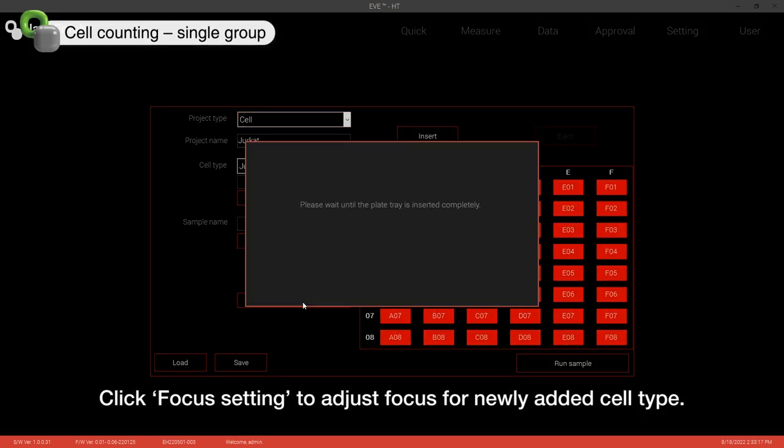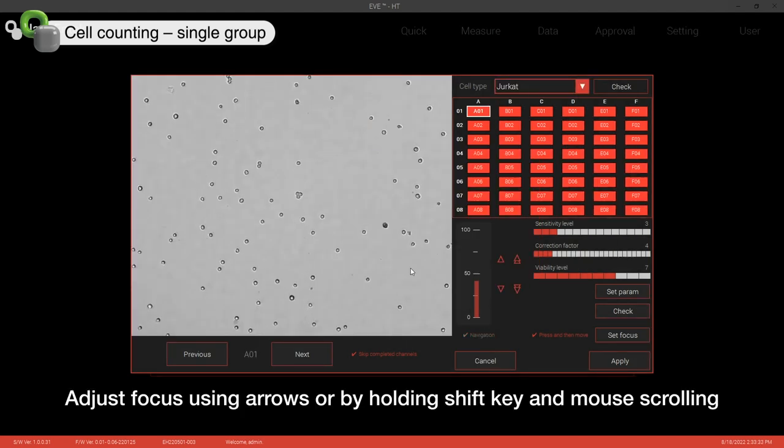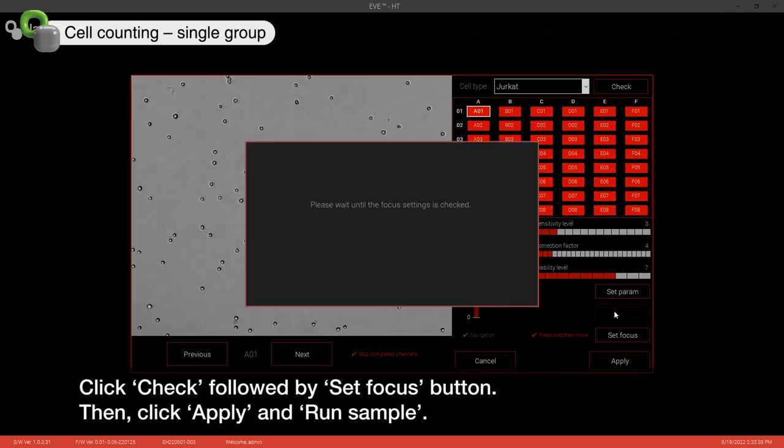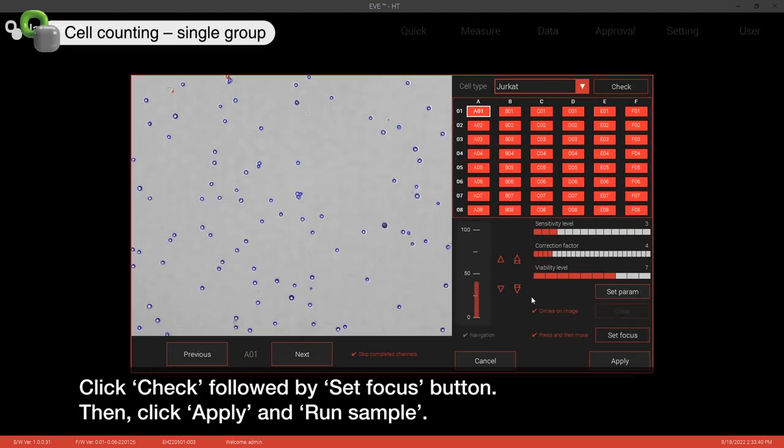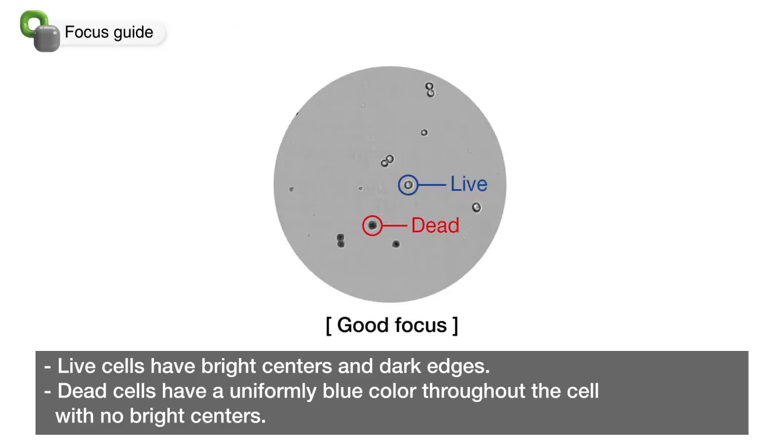Click Focus setting to adjust focus for newly added cell type. Adjust focus using arrows or by holding shift key and mouse scrolling. Click Check and then Set Focus button. Then click Apply and Run Sample. Please follow this focus guide for accurate measurement.